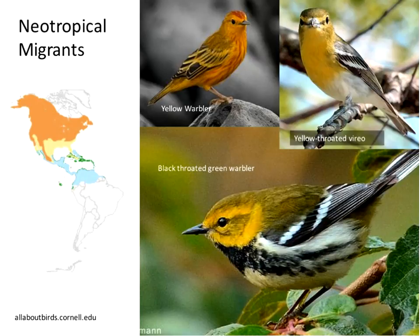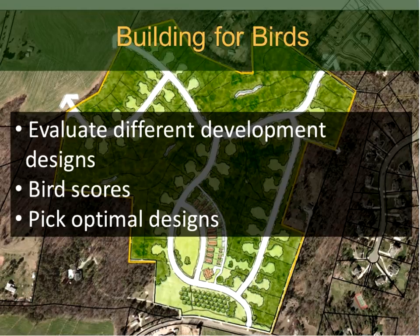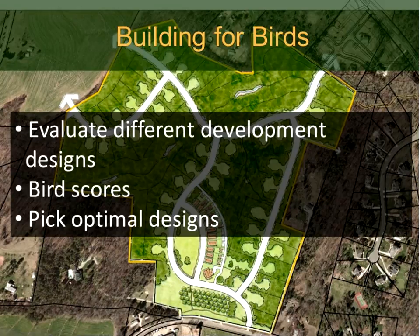Right now, we're in migration season here in Florida and I'm seeing warblers passing through. The yellow warbler, for example — the orange area on the map is its breeding range, the yellow area is the migration zone where birds are passing through to the Caribbean, Central America, and South America. My graduate student and I just finished an online evaluation tool to assess how different development designs impact bird species and bird habitat scores.